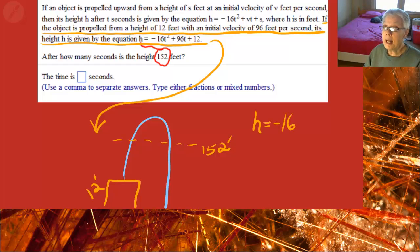So we write down the original equation. That is the equation you were just given. h equals negative 16t square plus 96t plus 12.